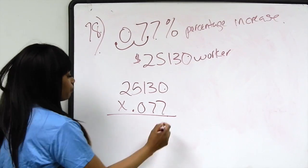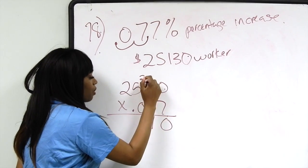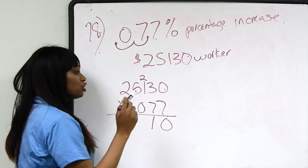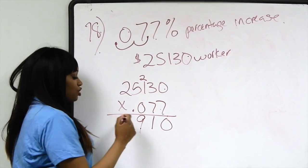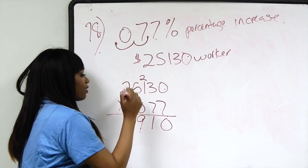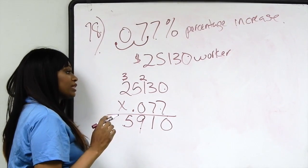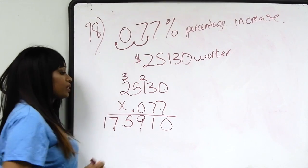7 times 0 is 0. 7 times 3 is 21. Bring down the 1, carry the 2 one place to the left. 7 times 1 is 7, plus 2 is 9. 7 times 5 is 35. Bring down the 5, carry the 3 one place to the left. 7 times 2 is 14, plus 3 is 17.